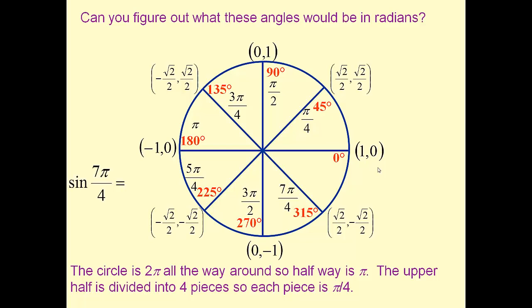So the sine of 7π/4 would be a quadrant 4 angle here, and its value would be negative square root of 2 over 2. The cosine of 7π/4 would be square root of 2 over 2.